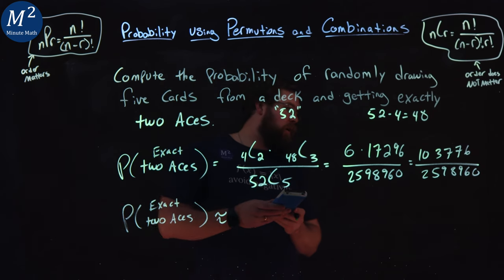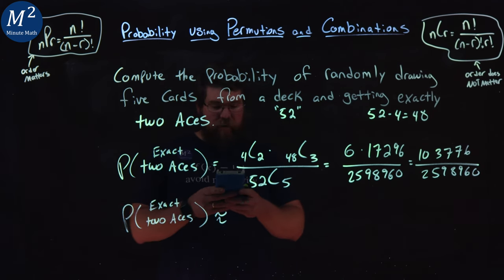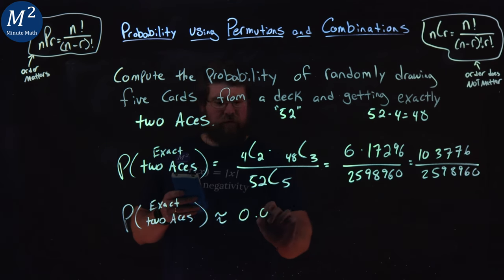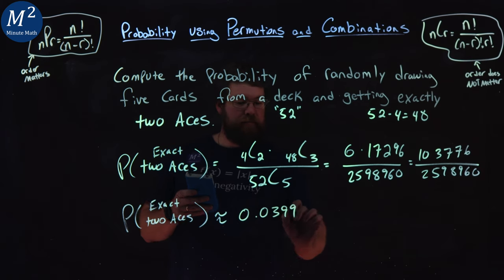And we have 0.0399 rounded. So the probability of getting exactly two aces randomly from a deck of cards when you draw five cards is 0.0399.